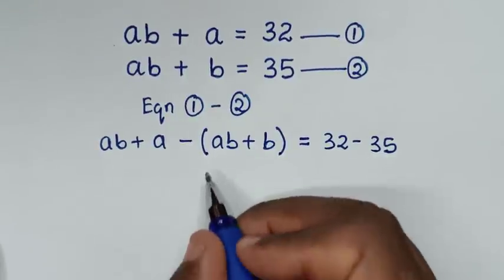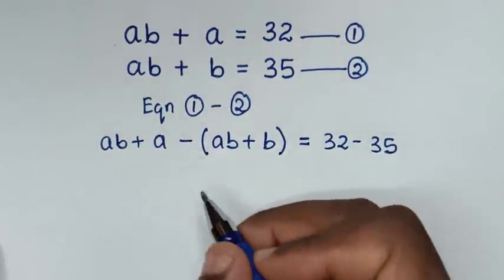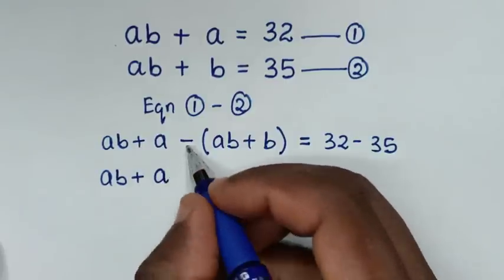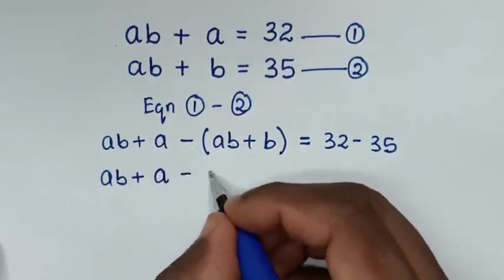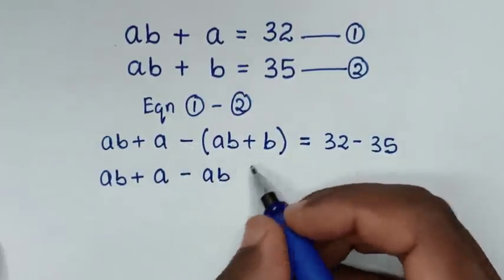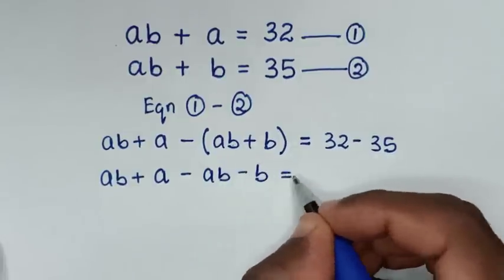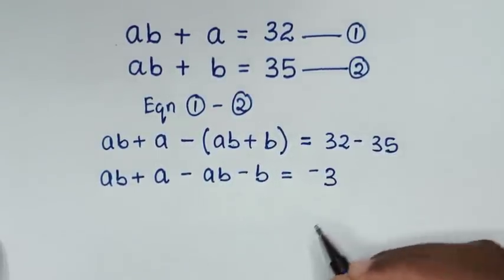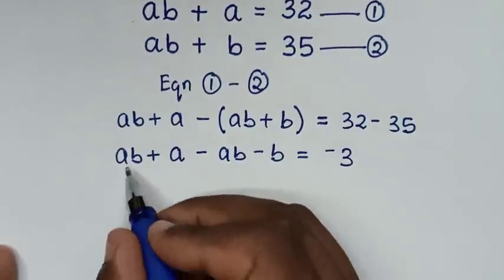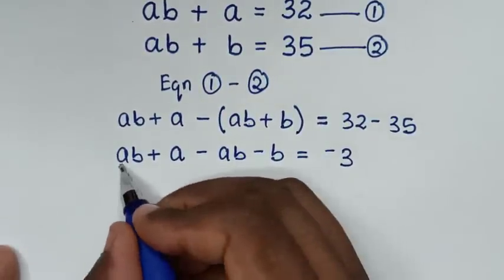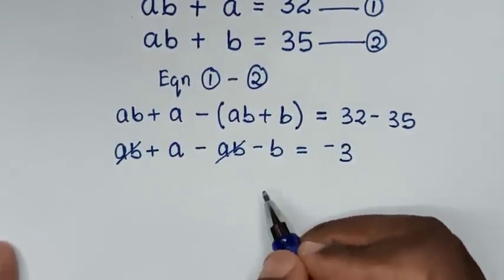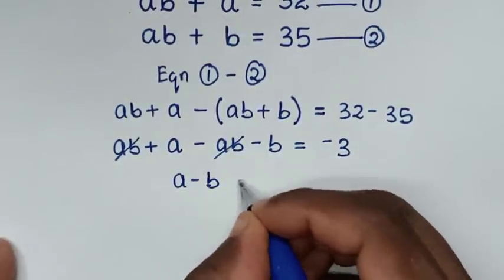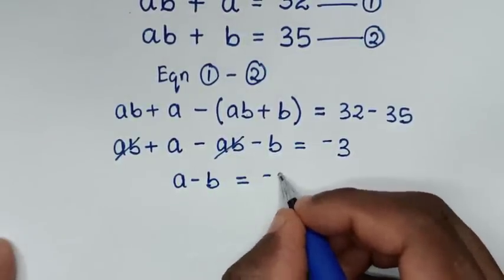In the next step, we'll open the bracket using the negative sign. So it will be AB plus A, then negative AB, then negative B, equals 32 minus 35, which is negative 3. From here, AB minus AB cancels to zero, leaving A minus B equals negative 3.